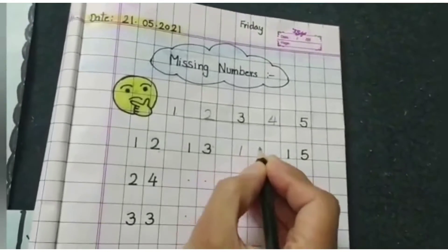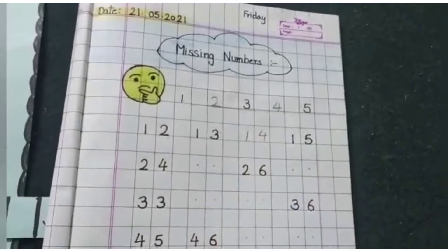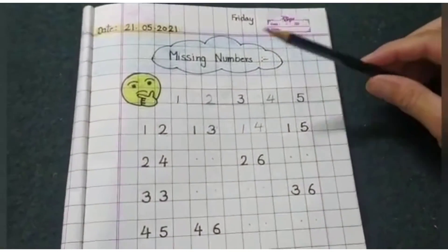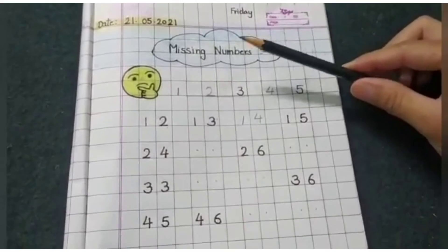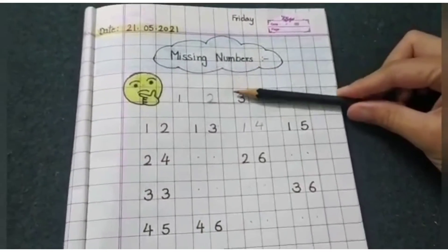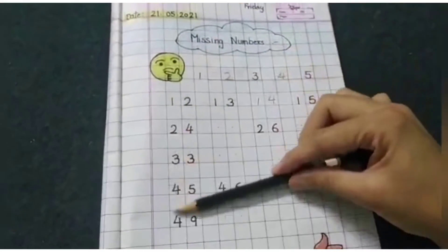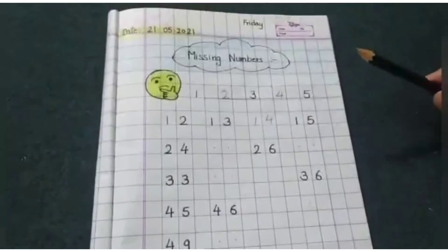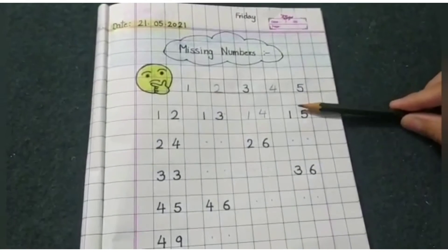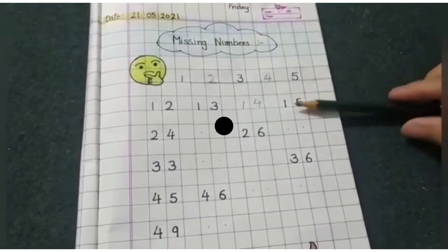Write down number 14. So dear students, I hope you all can understand how we can find missing numbers. This is your worksheet. Complete this worksheet in your maths notebook and send it to me.